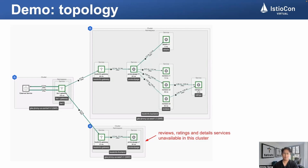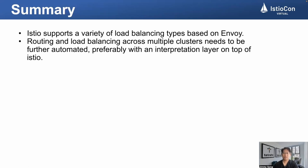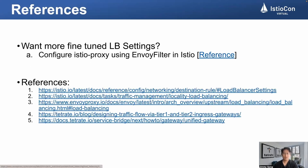Finally, let's summarize. Istio supports a variety of load balancing types. If you use Istio to create various resource objects, you need to switch back and forth between multiple clusters, which is extremely prone to errors. Routing and load balancing across multiple clusters needs to be further automated, probably with an abstraction layer on top of Istio. The Tier 1 cluster was deployed with TSB in this demo — it is a product from Tetrate and compatible with upstream Istio. You can learn more from the Tetrate website. If you want to fine-tune load balancing in Istio, you can use EnvoyFilter. Thank you.